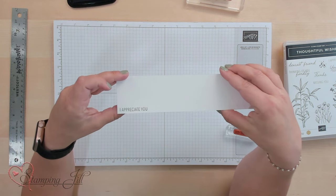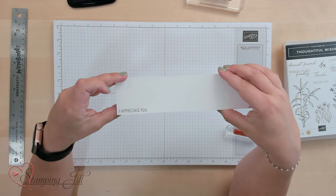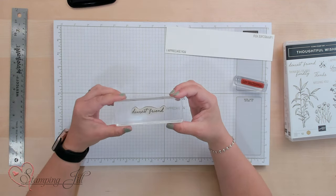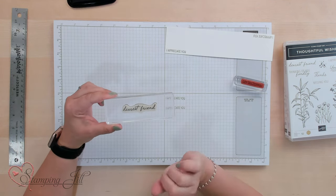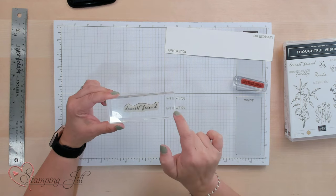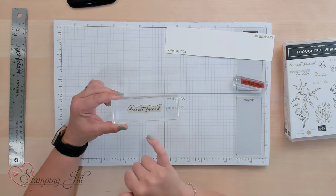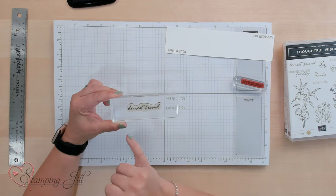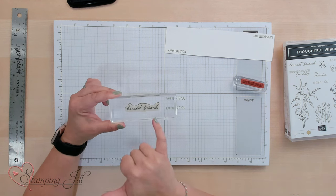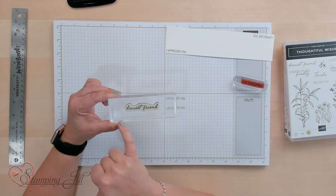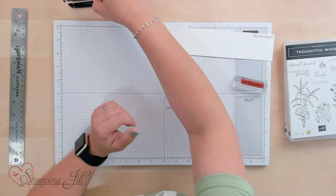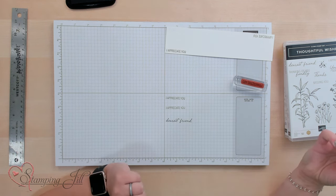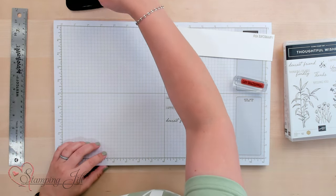Now if you're going to use a cursive stamp, sometimes that's a little trickier because the letters aren't all straight and it has a little curve to it. So I like to find two different letters that are the same. In this one it's really nice, we have Dearest Friend. So the D on the front and the D on the end, you're going to try to line those two letters up on the lines on your grid paper just like that, and that should get you a pretty straight line.